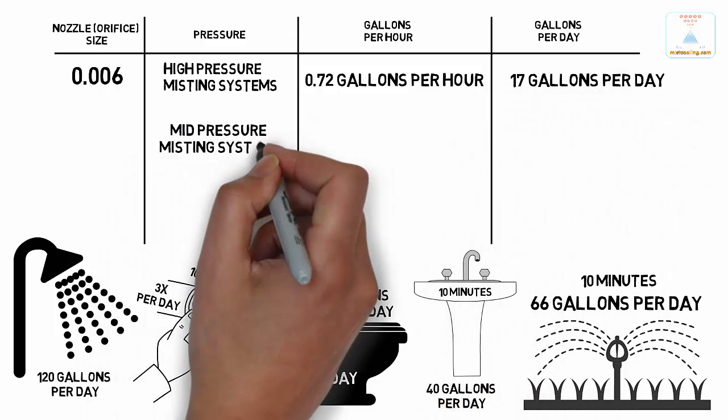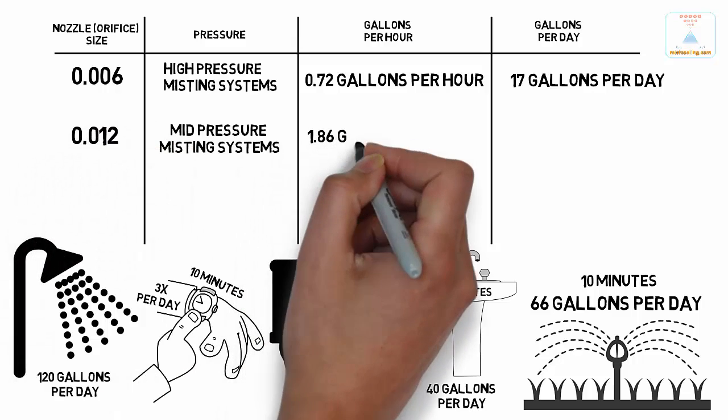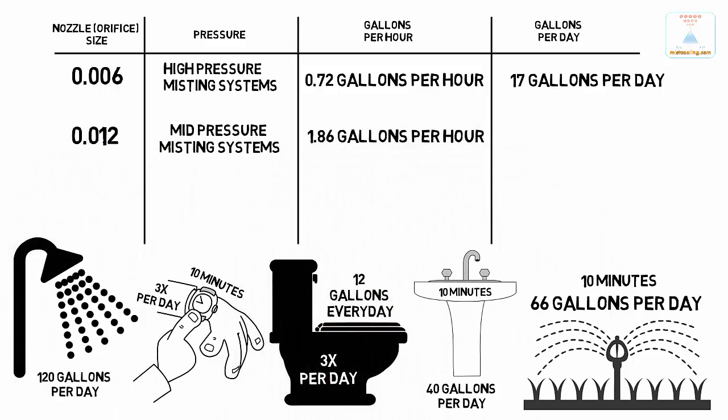The mid-pressure misting systems consume approximately 1.86 gallons per hour and approximately 43 gallons per day.